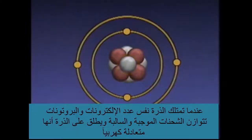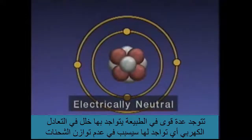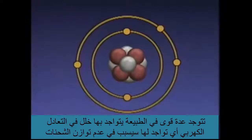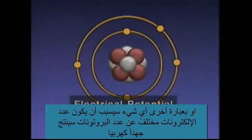When an atom has the same number of electrons as protons, the positive and negative charges are balanced, and the atom is said to be electrically neutral. There are many forces in nature that can upset this balance. Any occurrence that causes an electrical charge imbalance — anything that causes the number of electrons to differ from the number of protons — creates an electrical potential.